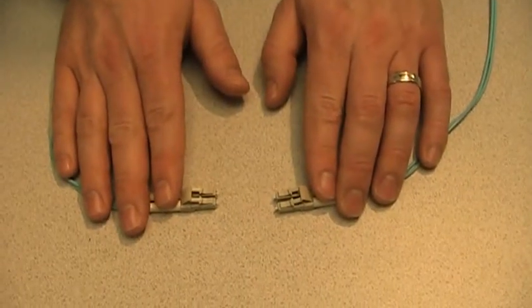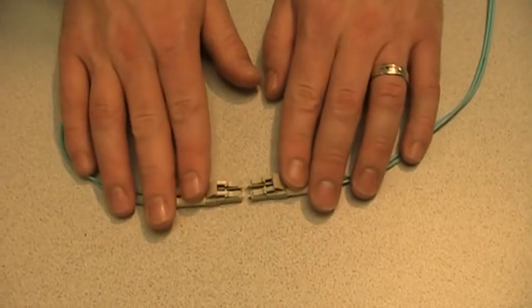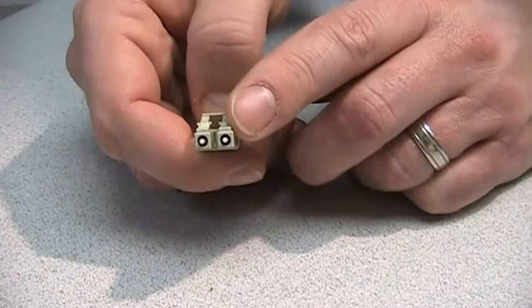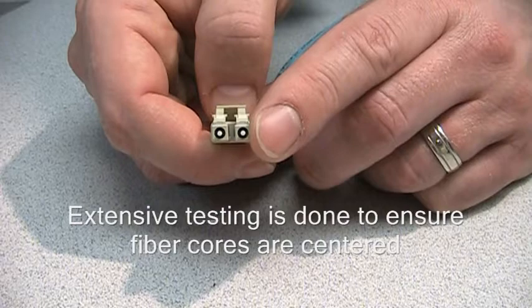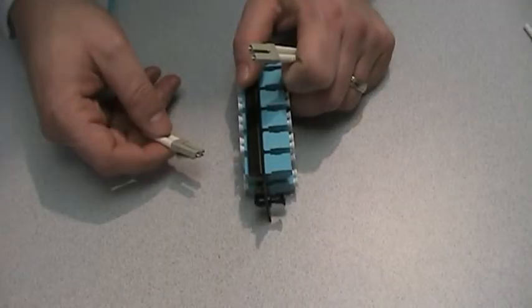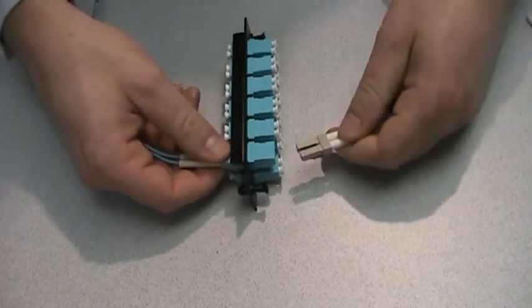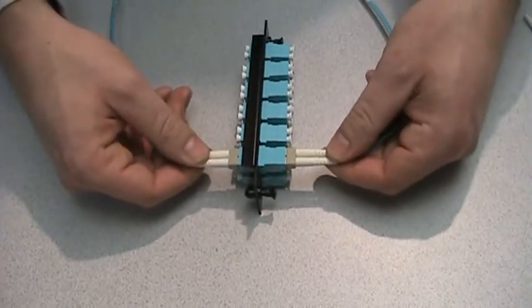A mated pair is when two fiber optic terminations are put together. If the cores don't match up precisely, you can have major light loss. If you can imagine trying to join two water hoses together and not having a solid coupling mechanism, the water is going to go all over the place. That's why having the highest precision components is critical in having a good mated pair.